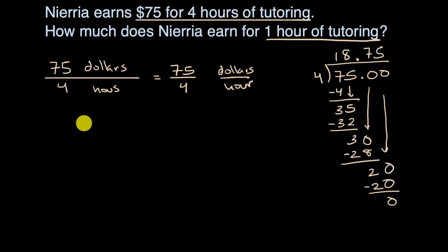No more remainder here. So we get that Nieria earns $18.75 per hour. Or you can just say that she makes $18.75 per hour.